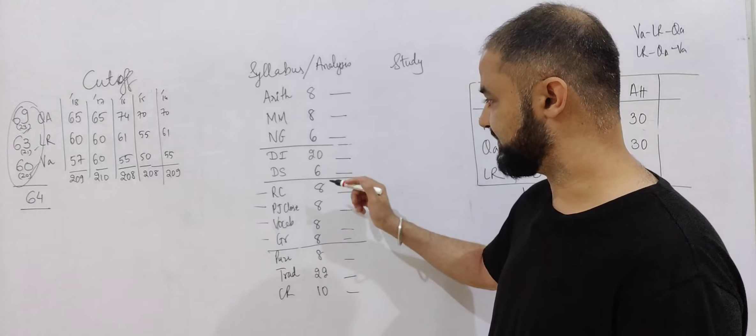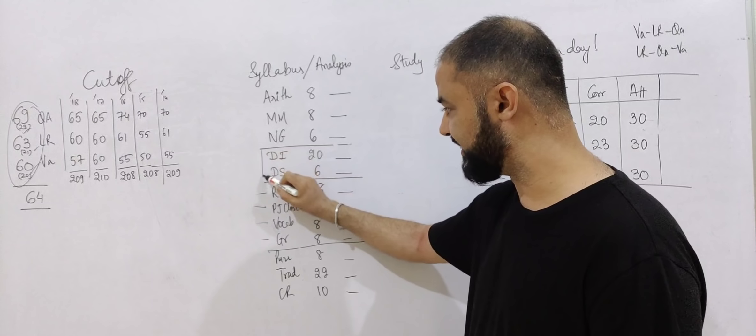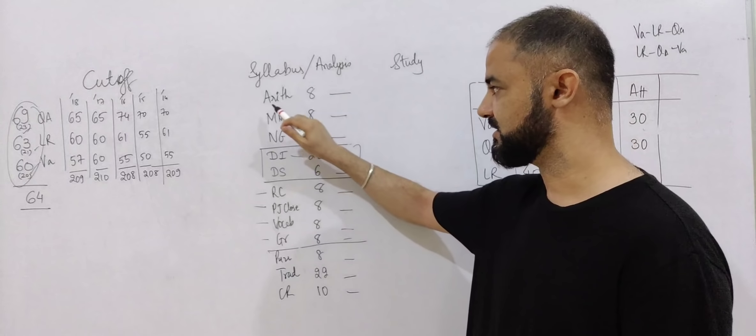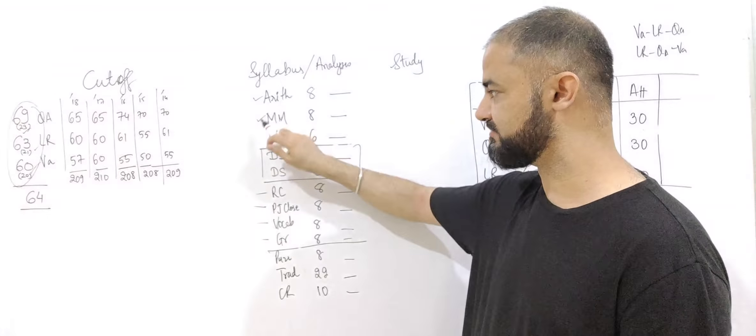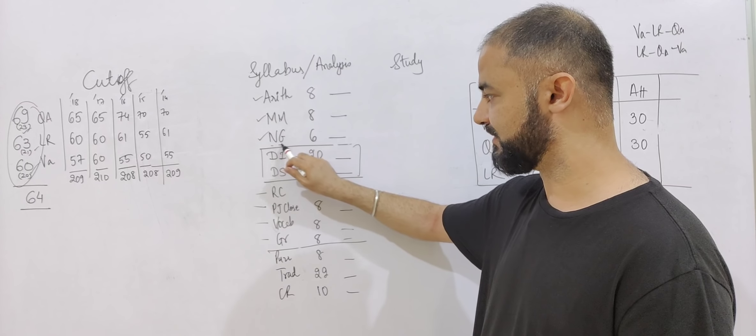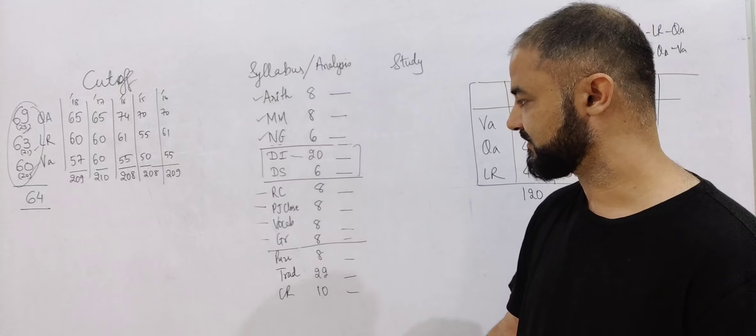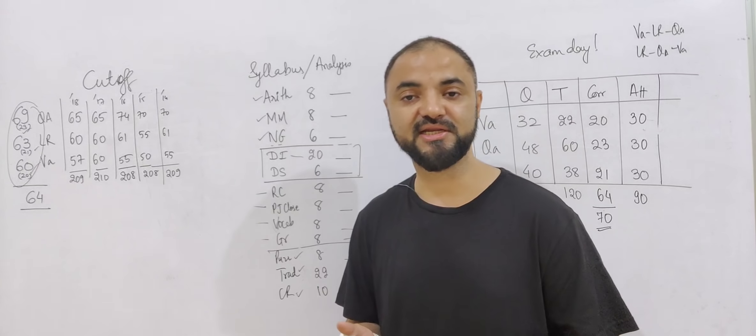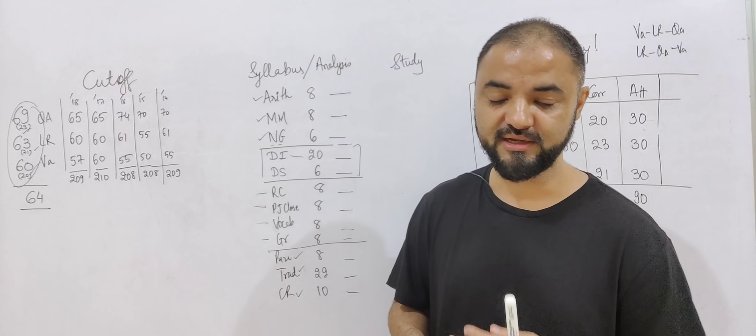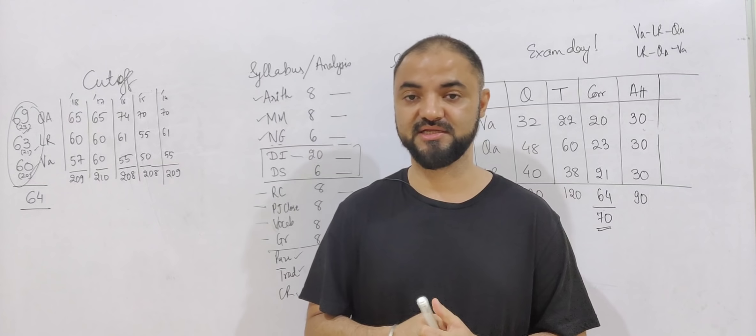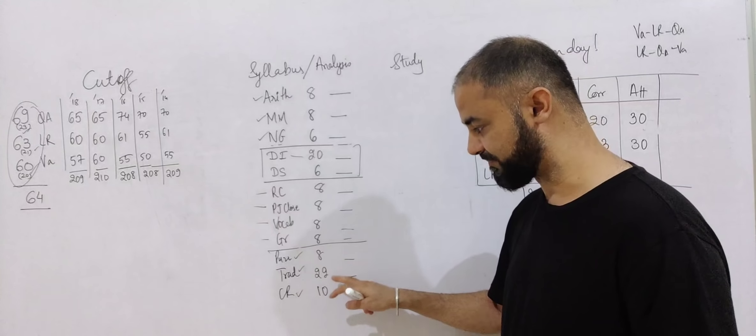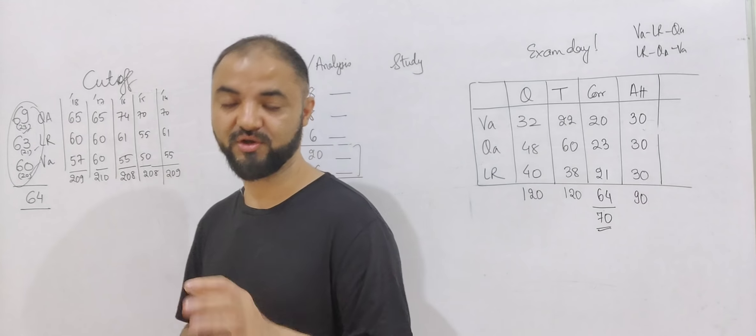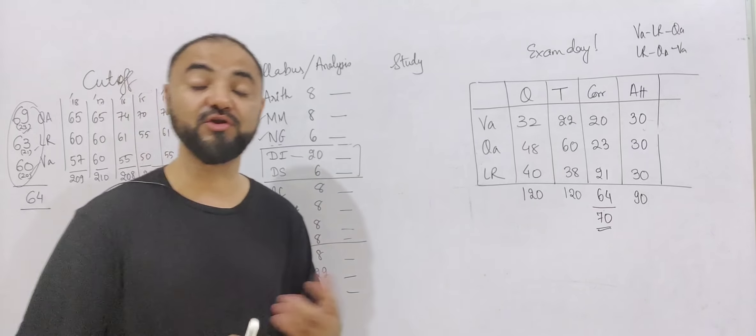DI and DS combined is more important than quant, that's the best part of NMAT exam. So DI 20 questions, DS 6 questions, arithmetic 8 questions, modern math 8 questions, and numbers geometry 6 questions. Same way, puzzles 8 questions, critical reasoning 10 questions, and traditional logic 22 questions. Traditional logic includes coin, decoding, input output, all those combined topics is 22 questions. And because this new topic traditional logic is not coming in the CAT exam, we might have to put extra effort for that topic.